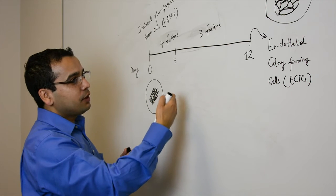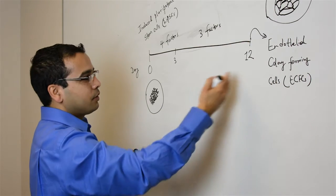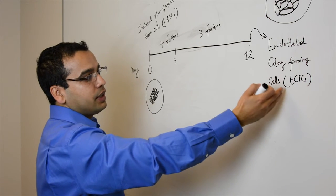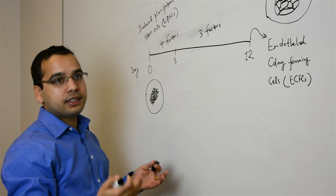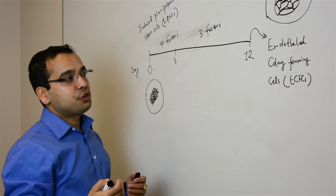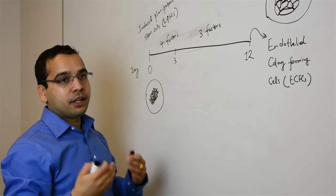We were able to get these ECFC cells or endothelial colony forming cells from iPSC cells. So we fully characterized these cells by doing many assays, and one of the important assays is to see the ability of these cells to make blood vessels.